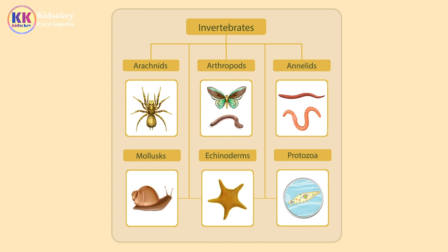Invertebrates are found on land, in ponds, oceans, and other waters. There are six groups of invertebrates.